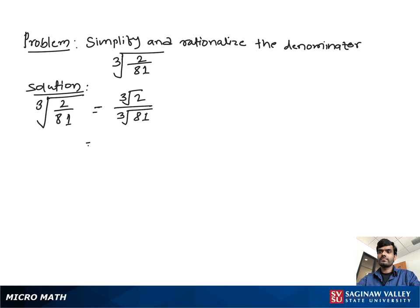We write cube root 2 over cube root 27 times cube root 3, which equals cube root 81. Then we get cube root 2 over cube root 27, which is 3, times cube root 3. Here you see we have cube root 3 at the denominator.